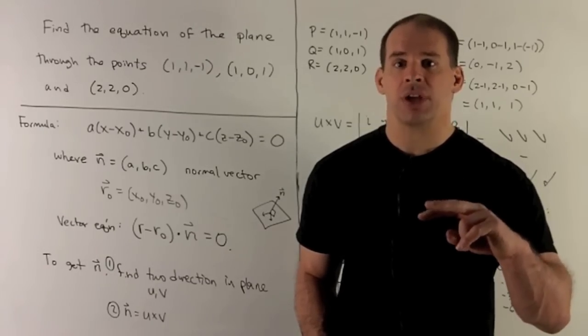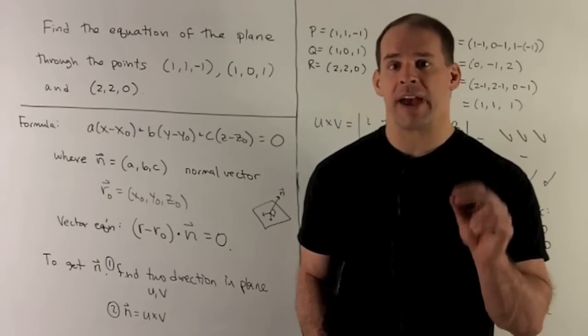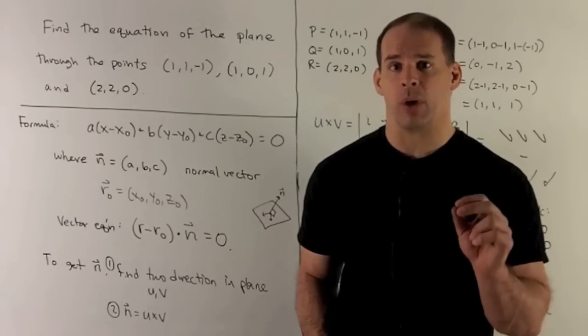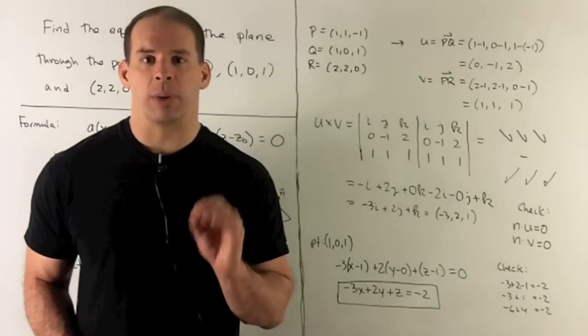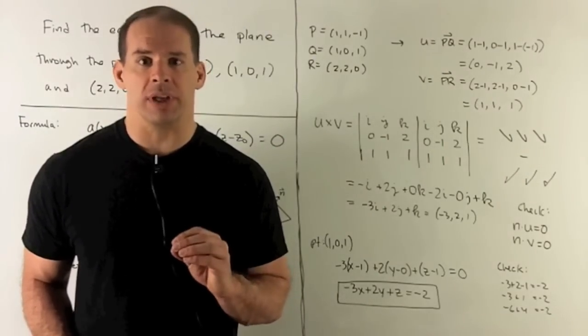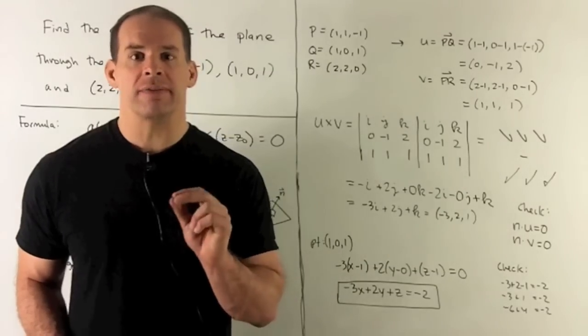So if I take two vectors, the cross product is going to produce a vector which is perpendicular to both. To find two directions in our plane, we start with our three points. So I'm going to construct the vectors.